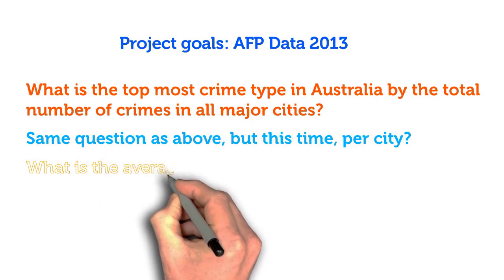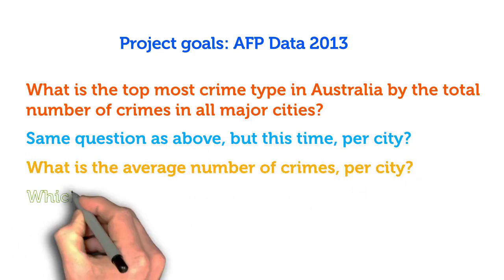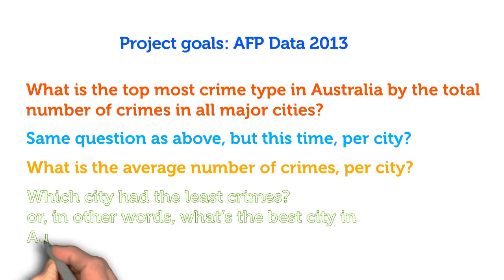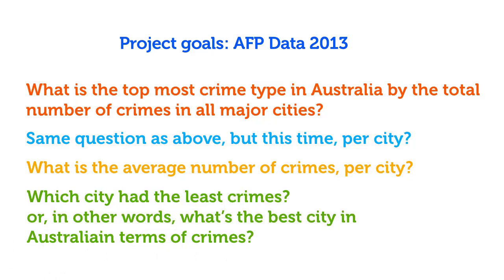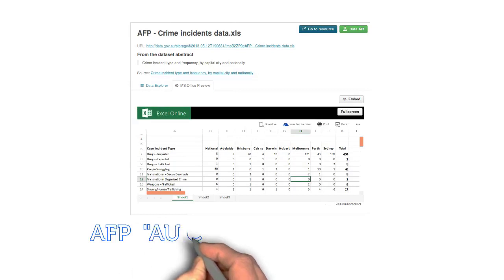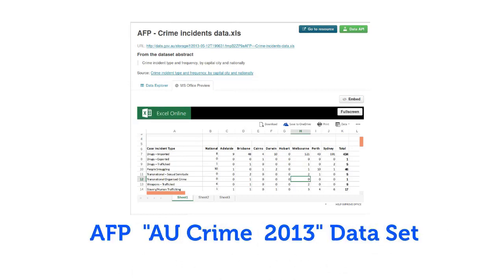The same question as above, but this time per city. What is the average number of crimes per city? Which city had the least crimes — or in other words, what's the best city in Australia in terms of crimes? Even though the dataset is not big, mining this toy dataset we will be able to develop our initial skills in bash and CSV data processing.